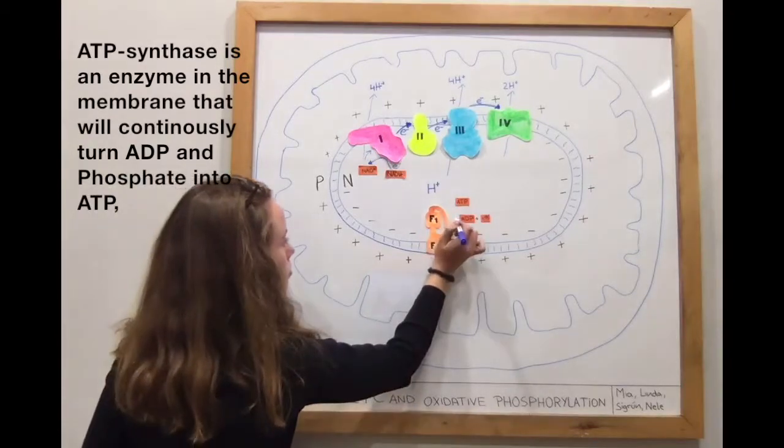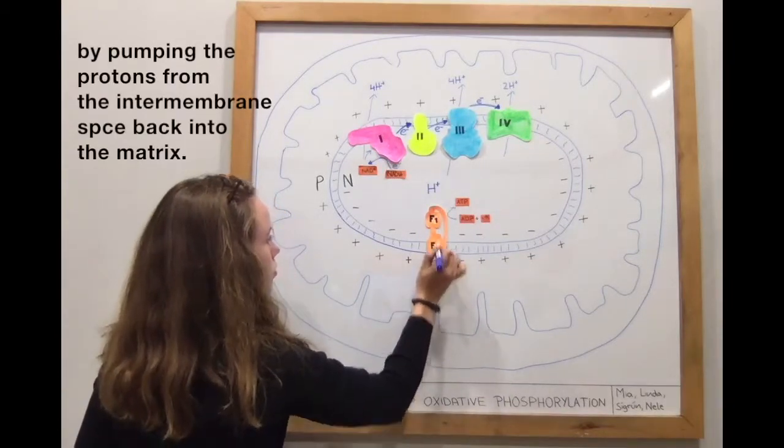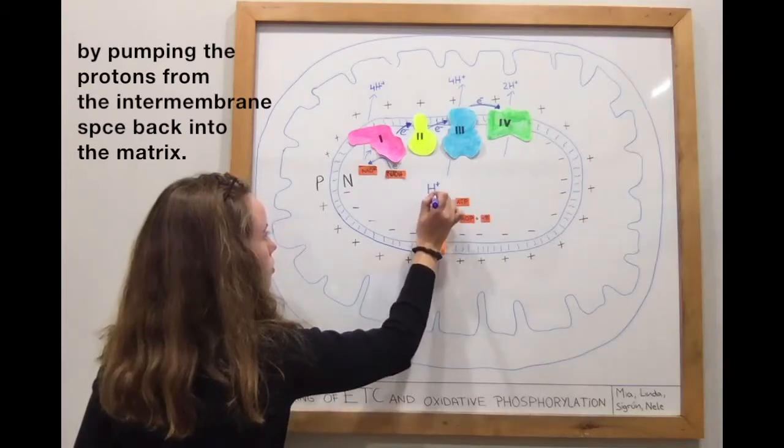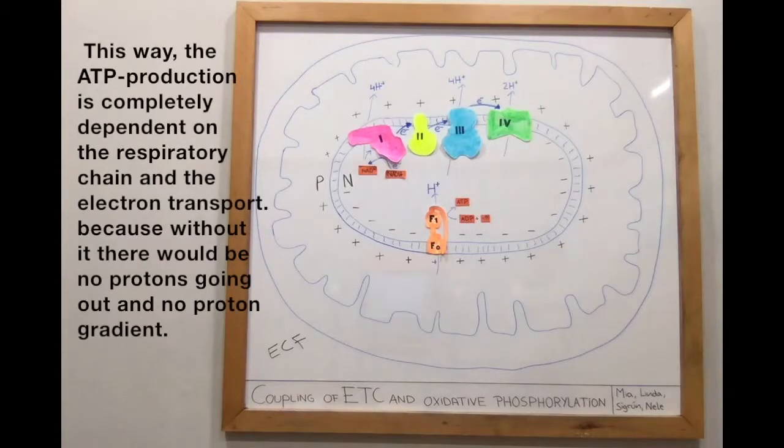When the protons go back into the intermembrane space, they need to go back through the membrane via the ATP synthase, which fuels the ATP production. This way, the ATP production is completely dependent on the respiratory chain and the electron transport, because without it there would be no protons going back out and no proton gradient.